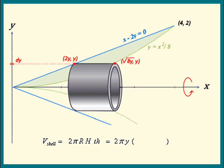That's right. It's the big x-coordinate minus the small x-coordinate. We get the square root of 8y minus 2y. Now multiply by the thickness dy. And there's the volume of that cylindrical shell.